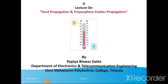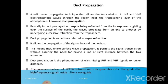Hi everyone. Today I am going to start with the last topic of the 4th chapter of PEC, that is duct propagation and tropospheric scatter propagation. First we will understand about what exactly duct propagation is. Duct propagation is a radio wave propagation technique that allows the transmission of UHF — ultra high frequency — and VHF electromagnetic waves through the region near the tropospheric layer of the atmosphere.